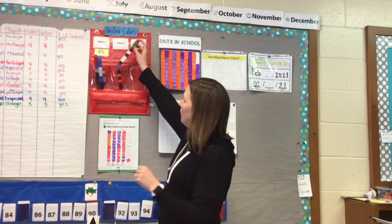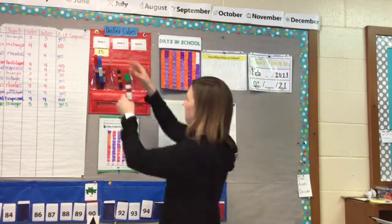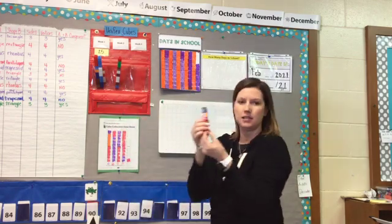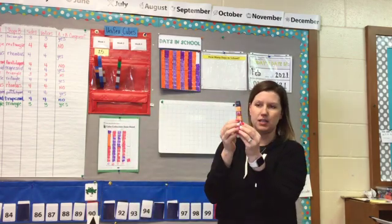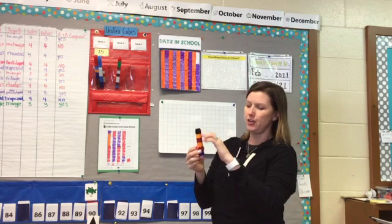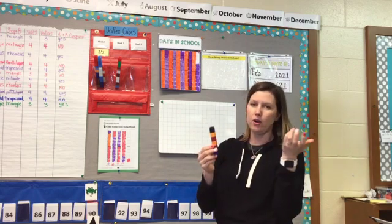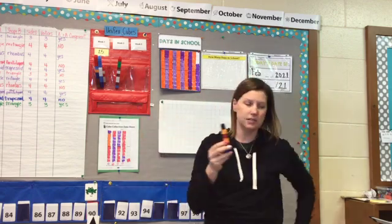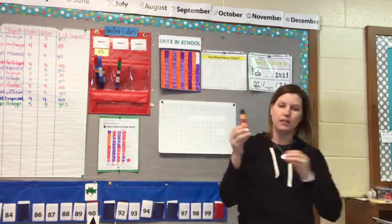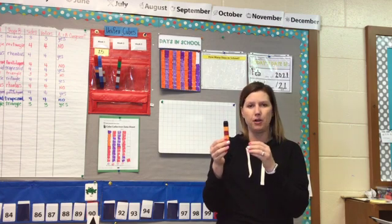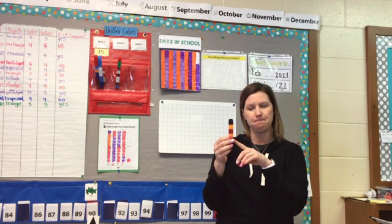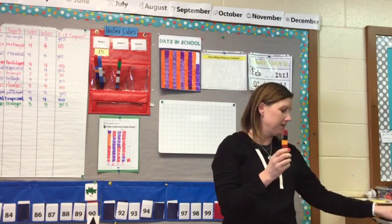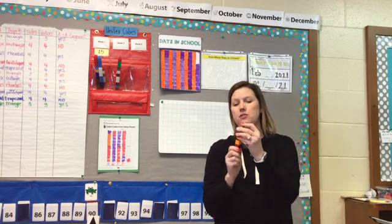We already have 16 for week 2. So we have to finish making this 10-stick before we start a new one. We have 10 and 6, so how many more do I need to make a 10? What is the 10 partner that goes with 6? 4. So we can add 4 more to make a new 10-stick.